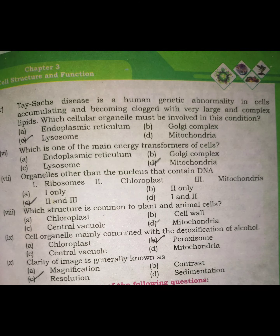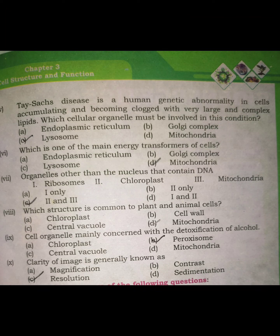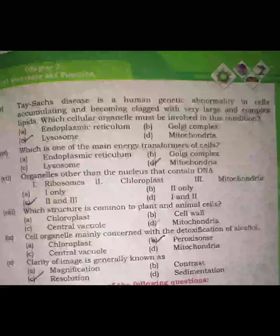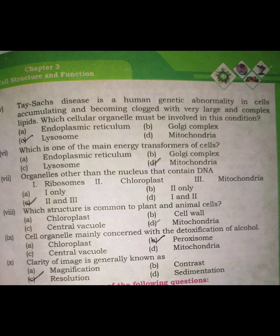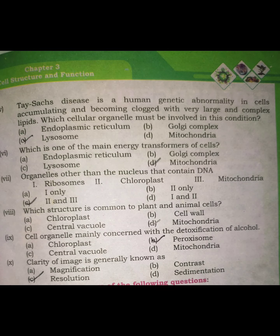Which structure is common to both plant and animal cells? Chloroplast and cell wall are only in plants. The central vacuole, also called tonoplast, is also only in plants. Mitochondria, however, are found in both plant and animal cells, making mitochondria the correct answer.